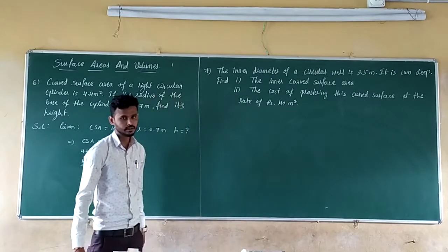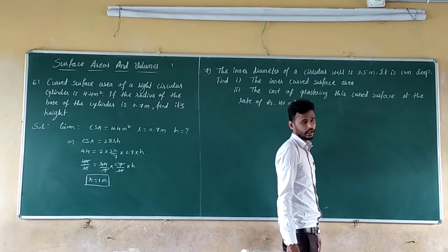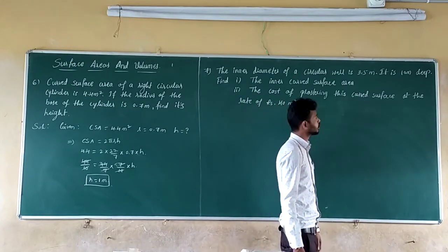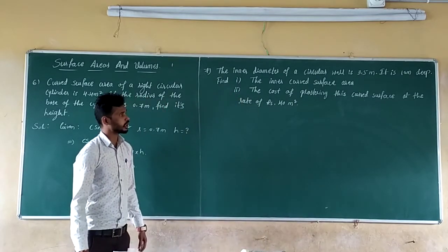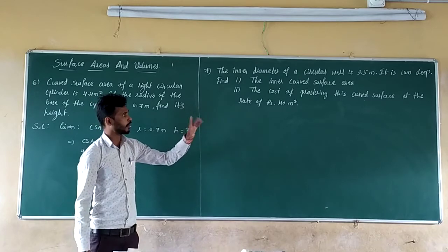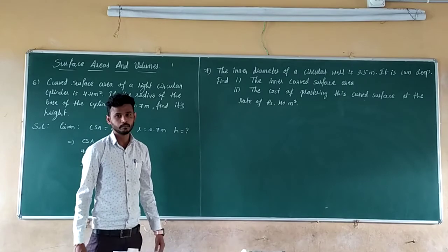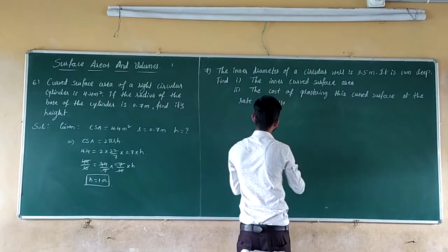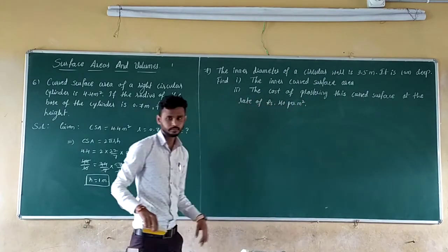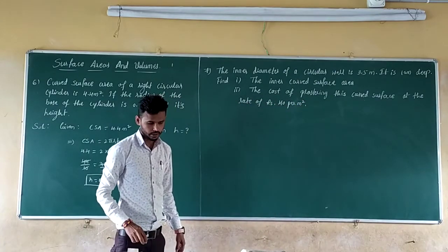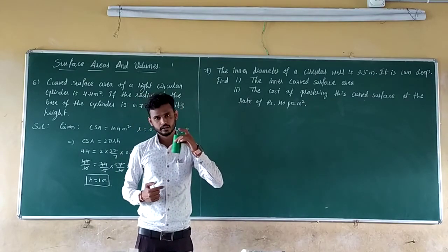Next question: The inner diameter of a circular well is 3.5 m and its depth is 10 m. Find the inner curved surface area and the cost of plastering that curved surface area at the rate of ₹40 per m². The well is in the shape of a circular cylinder, with depth as the height.